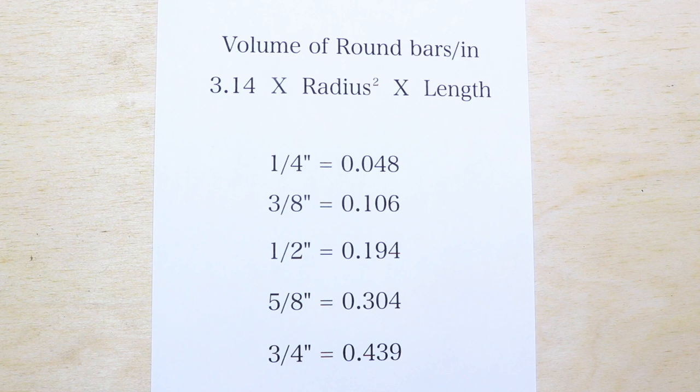The formula for round bars is a little bit more involved but it's still easy enough. 3.14 is pi. You may remember that from school. And that gets multiplied by the square of the radius, which basically just means that you multiply the measurement for the radius by itself. And that gets multiplied by the length.